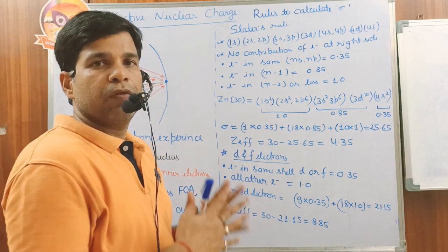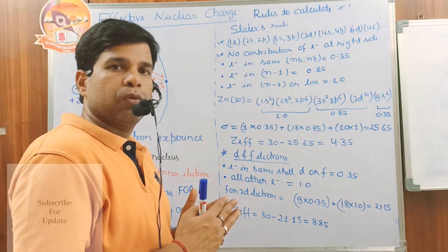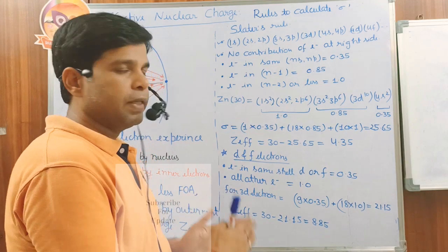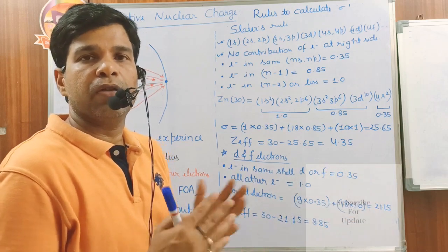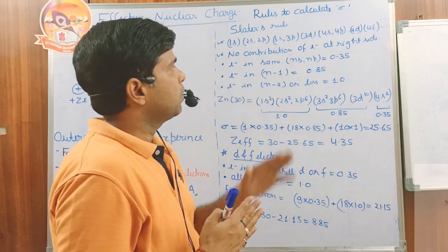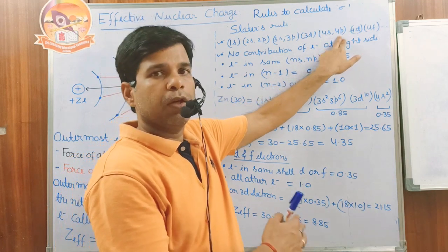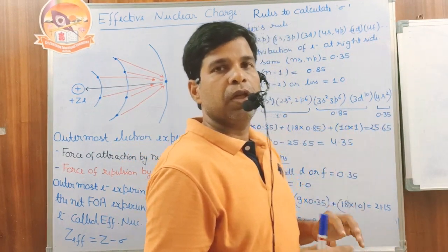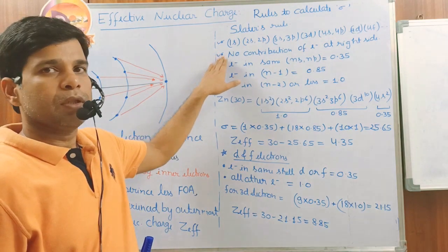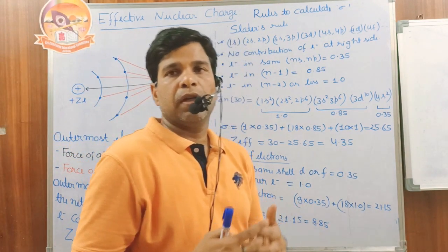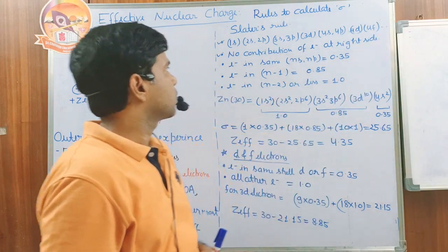According to Slater's rule, first we arrange the electronic configuration of the atom as: (1s), then (2s 2p), then (3s 3p), then (3d), then (4s 4p), then (4d), then (4f), and so on. If we want to calculate Z_effective for 4f or 4p, all electrons present to the right side contribute nothing to the effective nuclear charge. All electrons to the left side have contribution in the calculation of effective nuclear charge.